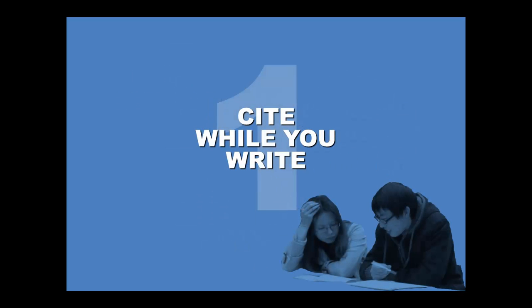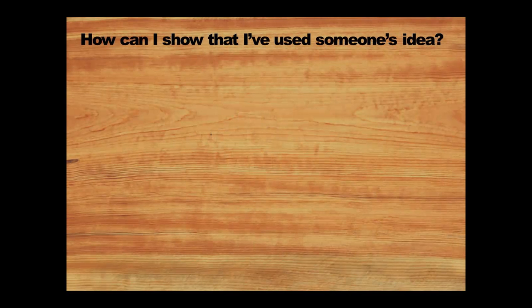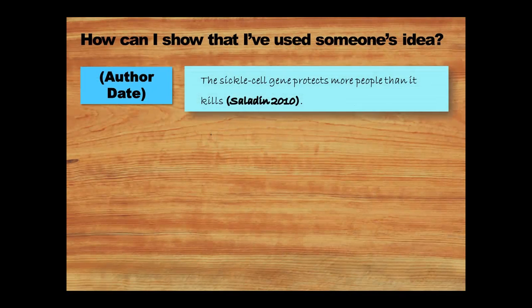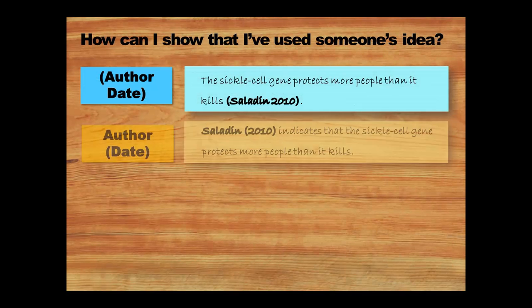Citing while you're writing may not sound exciting, but it does make referencing a cinch. Citing means showing how you've used other people's ideas. Straight after their ideas, put authors' family names and the dates they came up with their ideas in brackets. Or make the author part of your sentence, followed by the date in brackets. It's as simple as that.